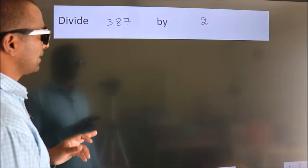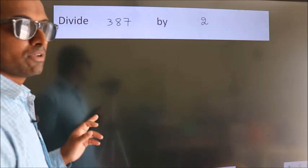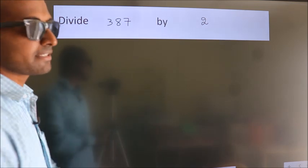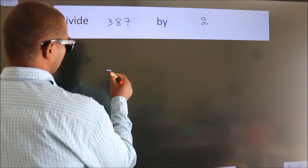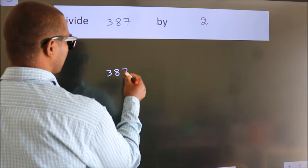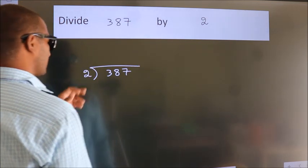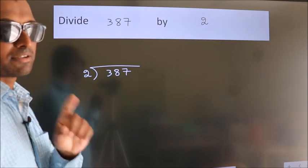Divide 387 by 2. To do this division, we should frame it in this way. 387 here, 2 here. This is your step 1.